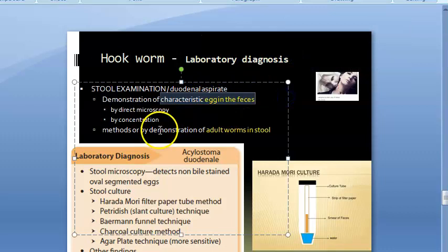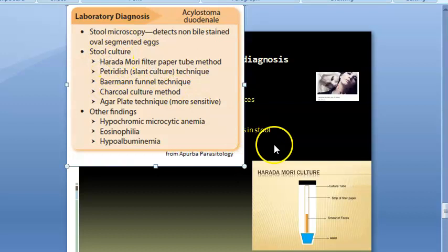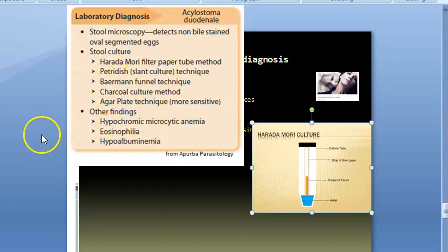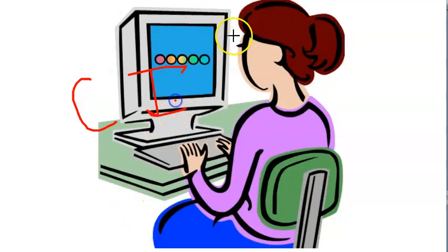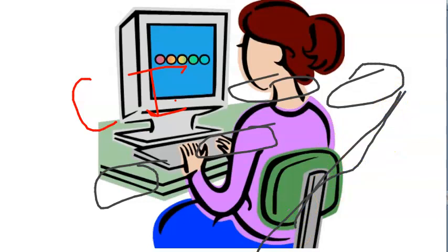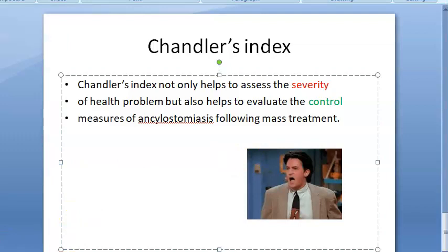For lab diagnosis, you can see eggs in the feces or identify the worms directly. The Harada-Mori method of stool culture using a petri dish is one technique. The eggs to look for are non-bile-stained, oval, segmented, and gray in color — those are the Ancylostoma duodenale eggs. Counting these eggs is what Chandler's Index is based on.